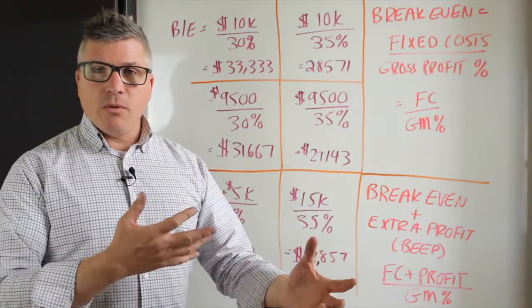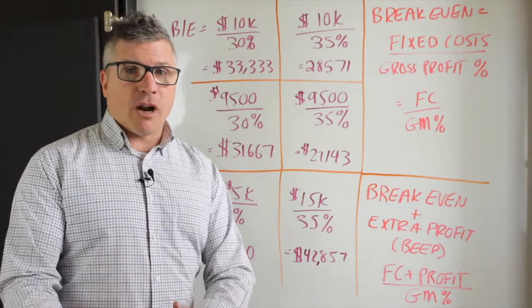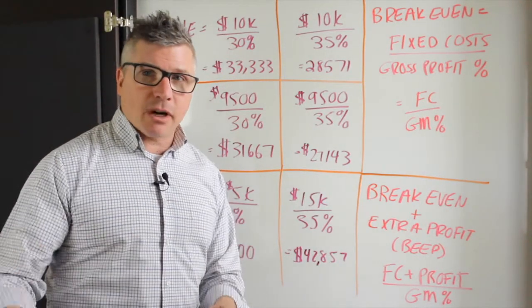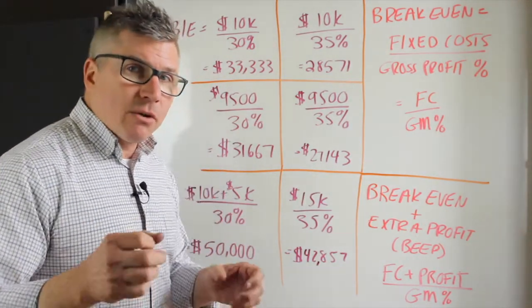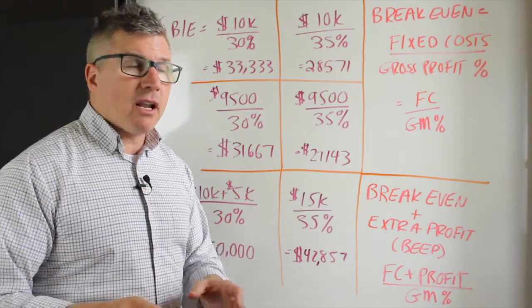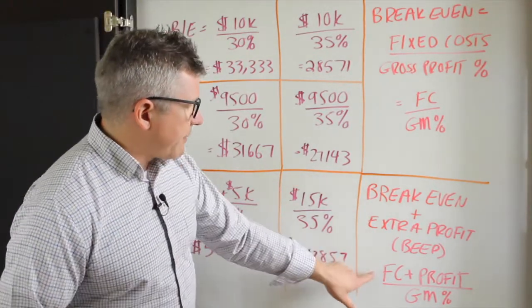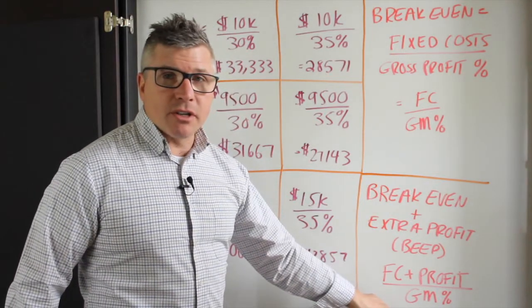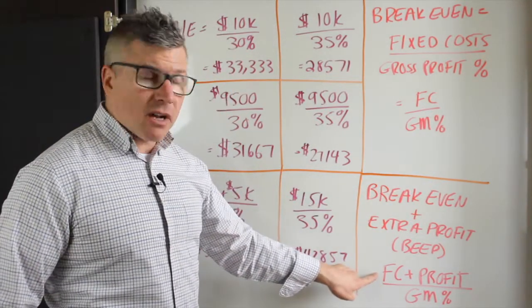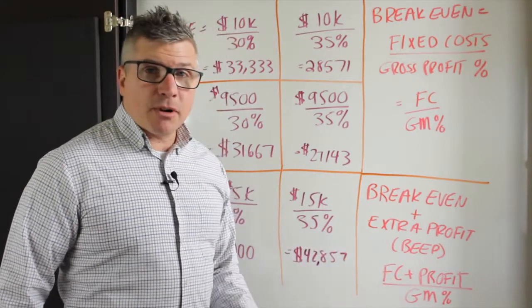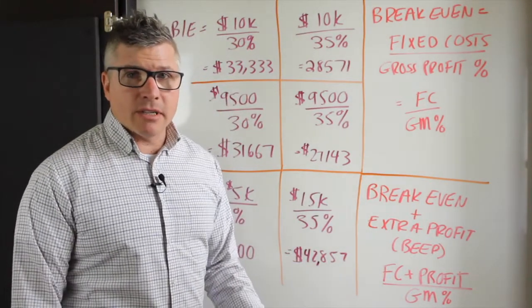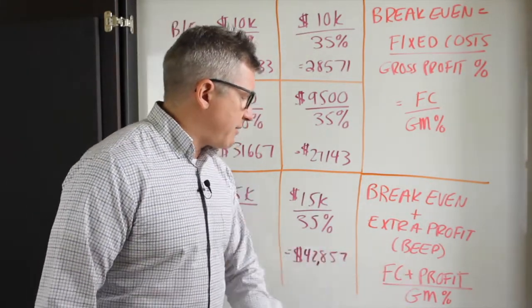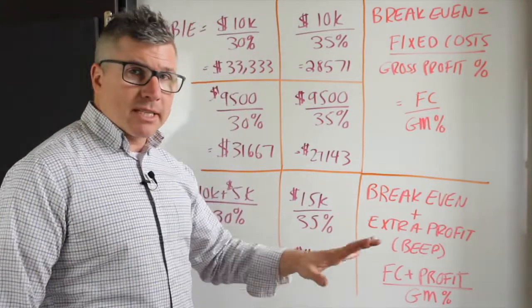So let's shift gears over to what do we do to increase our profits? Break-even is okay, but we need profitability in the business. So the break-even with extra profit, here's the formula: it's our fixed cost plus a budget for profit divided by our gross profit margin. Just like we have to pay our fixed costs, we're going to make a decision about how much profit we're absolutely going to expect out of the business. So fixed cost plus profit divided by gross profit margin, almost exactly the same formula.